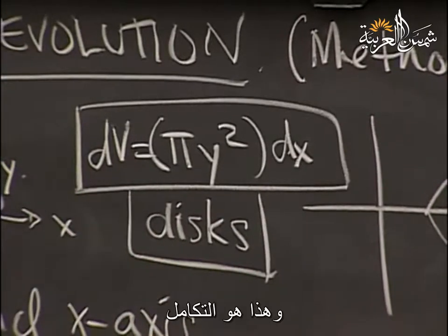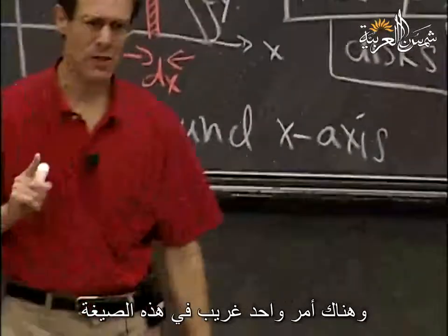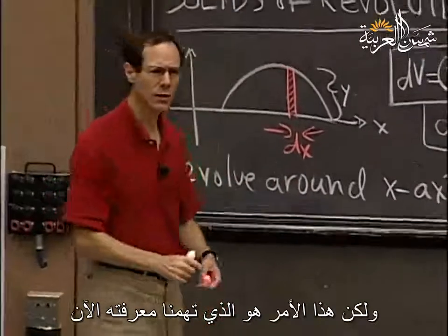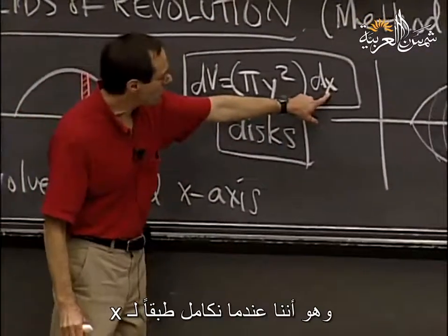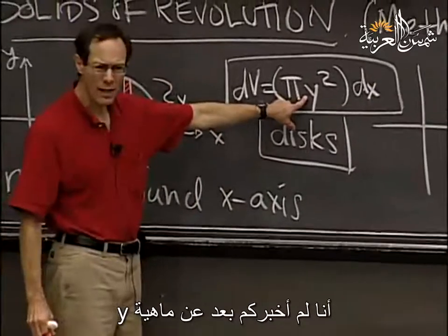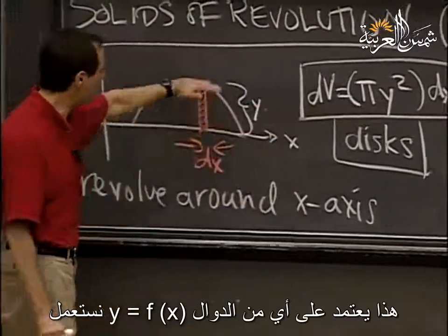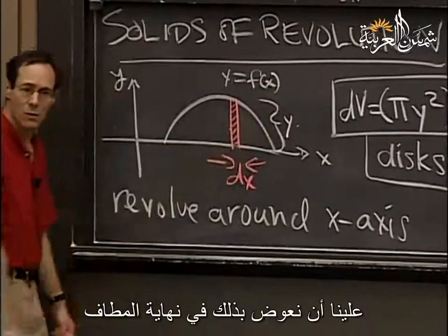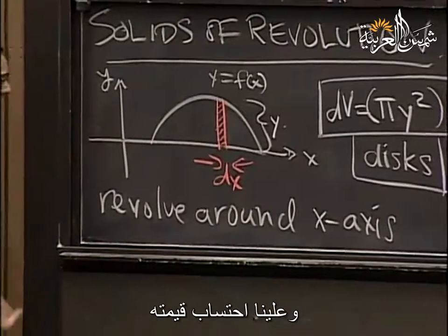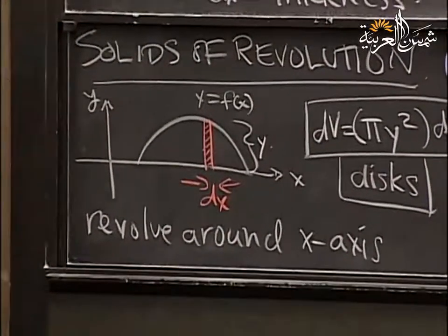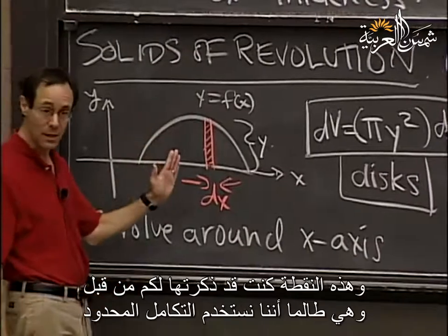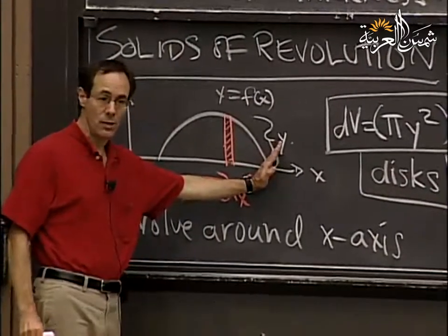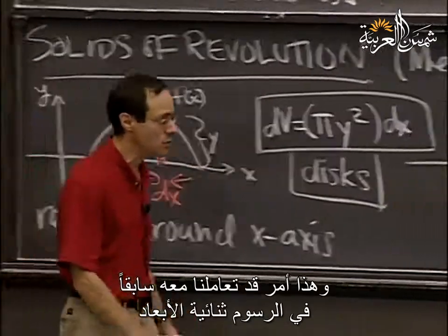There's one peculiar thing about this formula you should notice immediately: I'm integrating with respect to x, and I haven't yet told you what y is. That will depend on what function y equals f(x) I use, so we have to plug that in eventually. There's another very important point: in order to get a definite integral, we're going to have to figure out where we're starting and where we're ending — which is something we dealt with last time in 2D pictures.